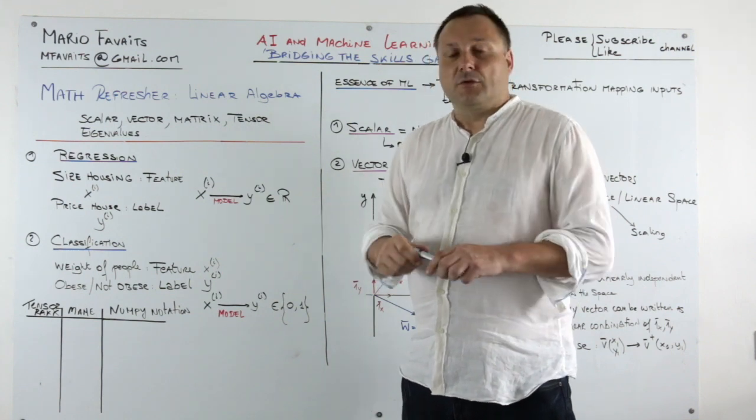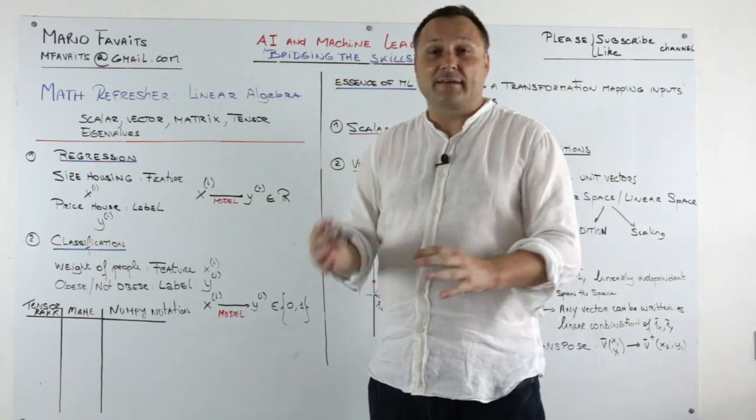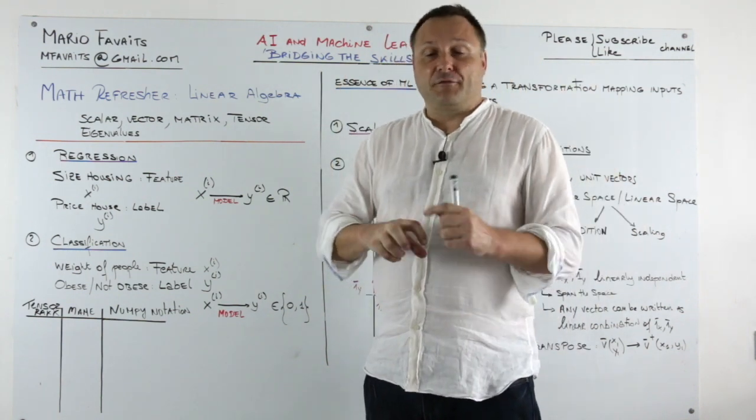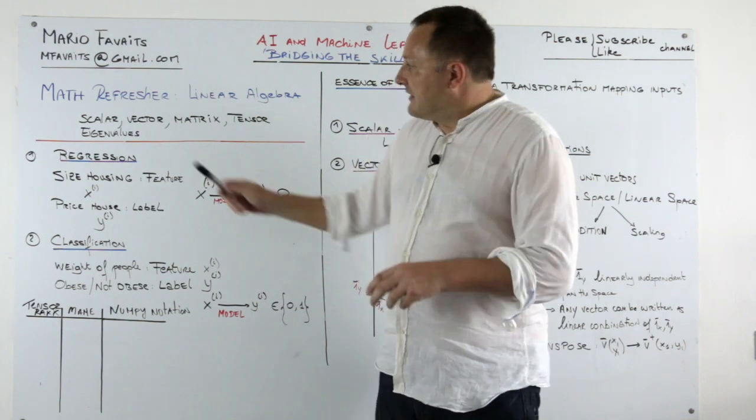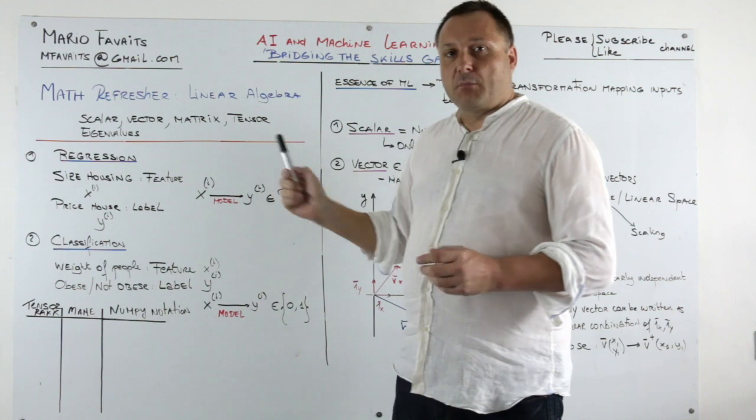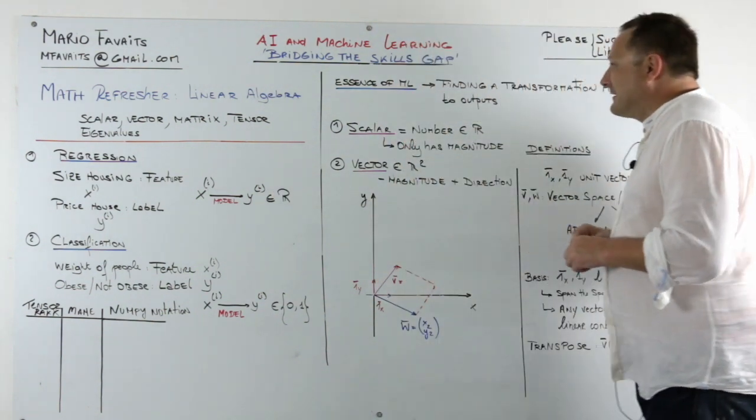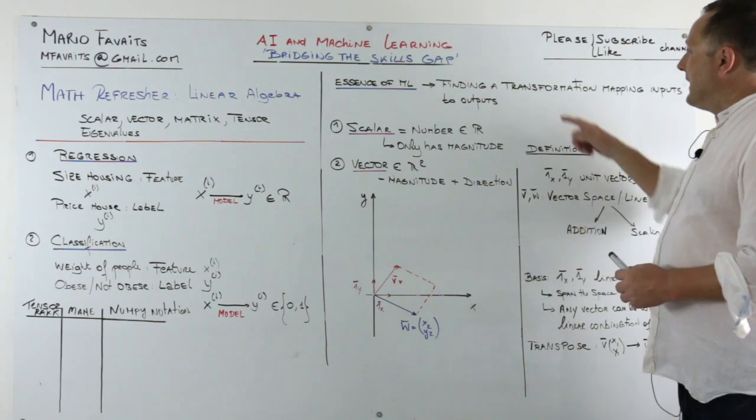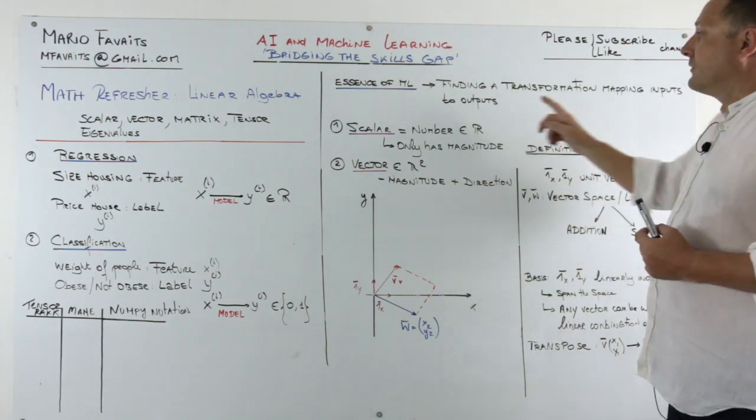This may sound trivial, but imagine there's machine learning problems that work on text. So that means we'll have to find a way to convert a text into a number. And these are just different blocks of numbers. So the essence of machine learning is to find a transformation, and that's where linear algebra comes in, that maps an input to an output.